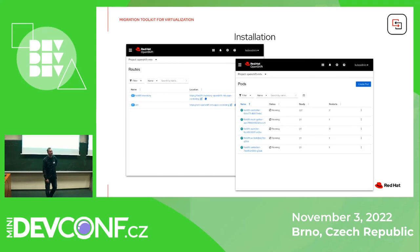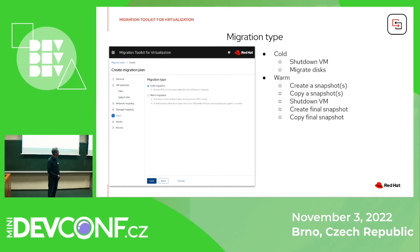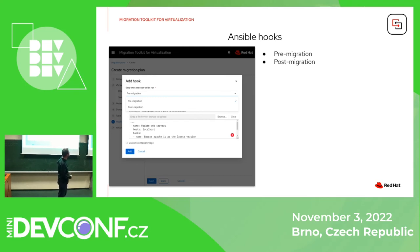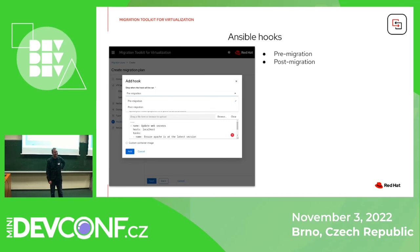I have another question. When you show the Ansible hooks, is it possible to use a public repo and reference a Git repository where you store Ansible playbooks, rather than copy-pasting the Ansible playbook content here by hand? Really good question. Currently no, but that's an interesting suggestion which I will pass to our team to implement. Currently you can either paste it or pass a custom container image.